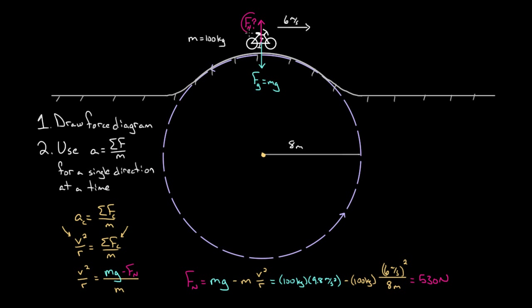The normal force on you and your bike as you ride over the hill is 530 Newtons — not equal to your weight of about 980 Newtons. You experience less normal force, which is natural. This is what happens when you ride over a hill fast — you feel slightly weightless. If you've ever gone a little too fast over a hill in a car, you feel that 'whoa' in your stomach. If you go too fast, the normal force becomes zero and you become airborne. So be careful driving over hills too fast.